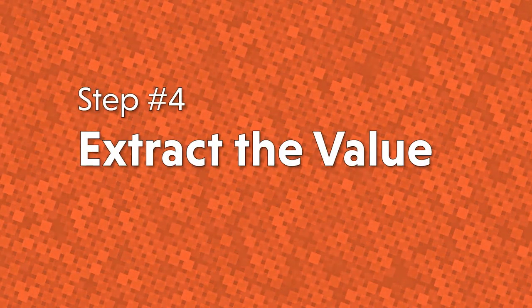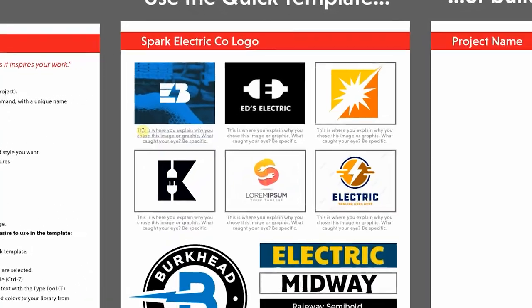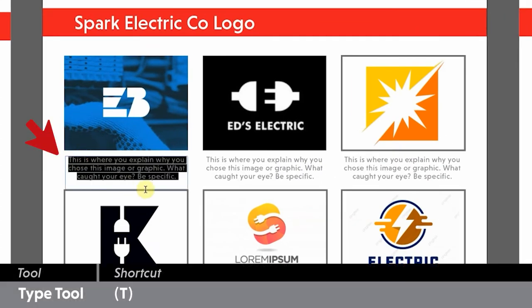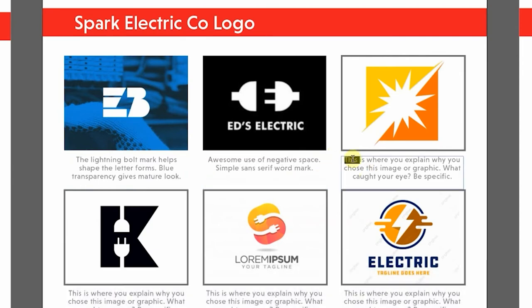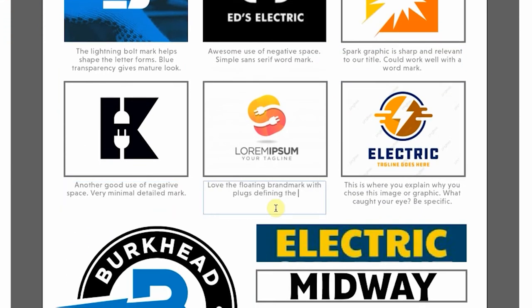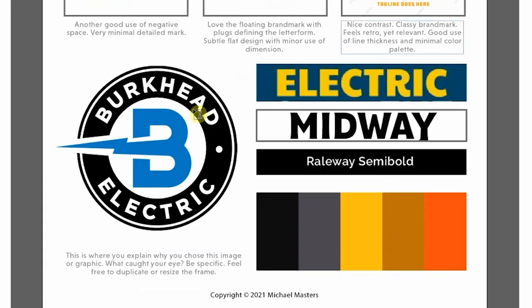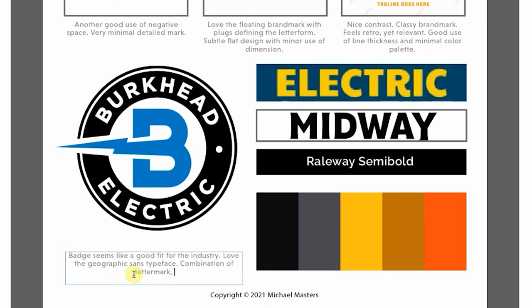Step number four: extract the value. Now that you have all of your design elements in position, we're going to do something that you really don't see on traditional mood boards. We're going to use the text underneath our pictures to briefly explain why we chose each graphic or image. Consider writing about things like the amount of detail, the boldness of colors and lines, the layout and alignment of the elements, or the proximity of elements in relation to each other. You don't need to write a novel — just list the parts that stood out to you the most.